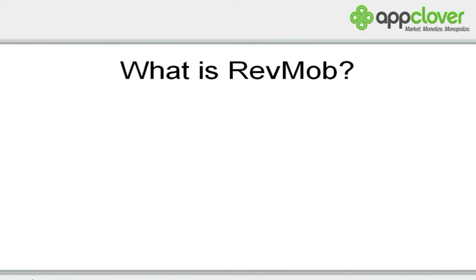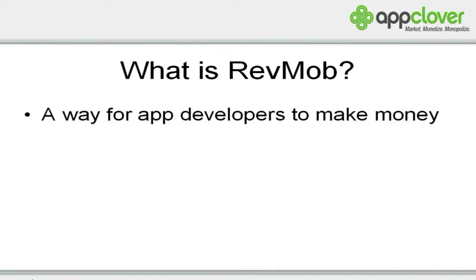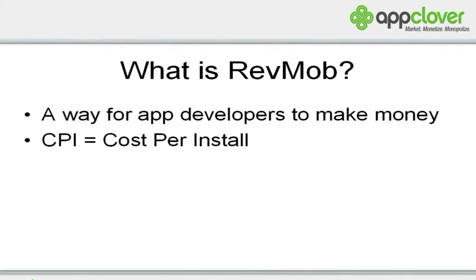Let's begin. What is Rev Mob? Rev Mob is a way for app developers to make money. It's awesome because you actually get to make a lot of money compared to many other monetization methods. It works on something called cost per install, or CPI. Many other monetization methods use something like cost per click, which is CPC, or cost per impression. This is cost per install, also sometimes known as cost per action or CPA.